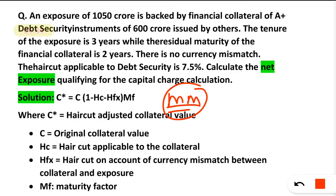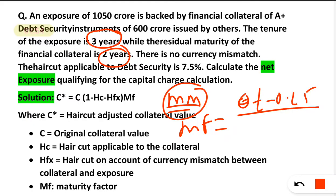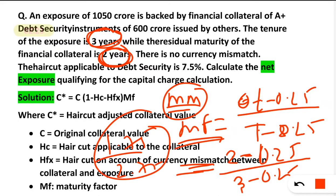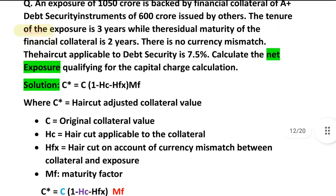Since there is a maturity mismatch, we calculate the maturity factor (MF) first. The formula is: MF = (t − 0.25) / (T − 0.25), where small t is the smaller value (collateral maturity = 2 years) and capital T is the larger value (loan tenure = 3 years). So MF = (2 − 0.25) / (3 − 0.25) = 1.75 / 2.75.